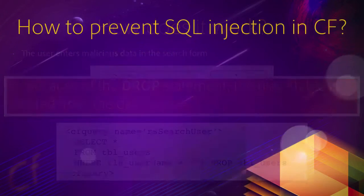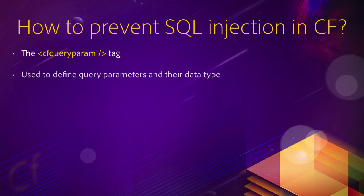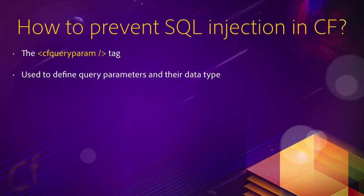So how do we protect ourselves against it? In ColdFusion, we have the cfQueryParam tag. This tag is used to define query parameters and their data type. So if the database expects a string of text, we can define it using cfQueryParam, and that string of text will never be interpreted as a snippet of SQL code. This is how we can prevent this attack. In the next video, we will implement the cfQueryParam tag in our application.